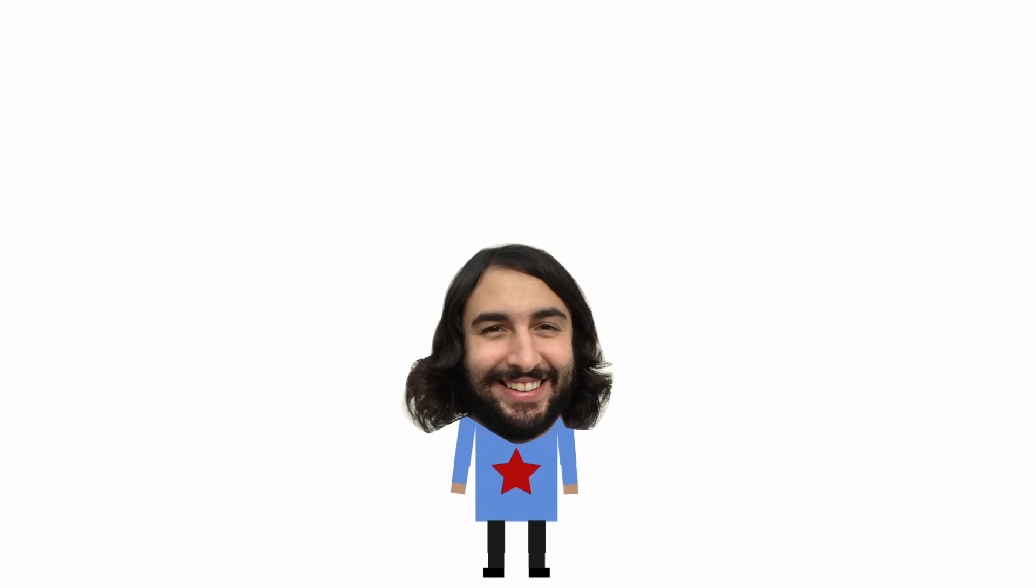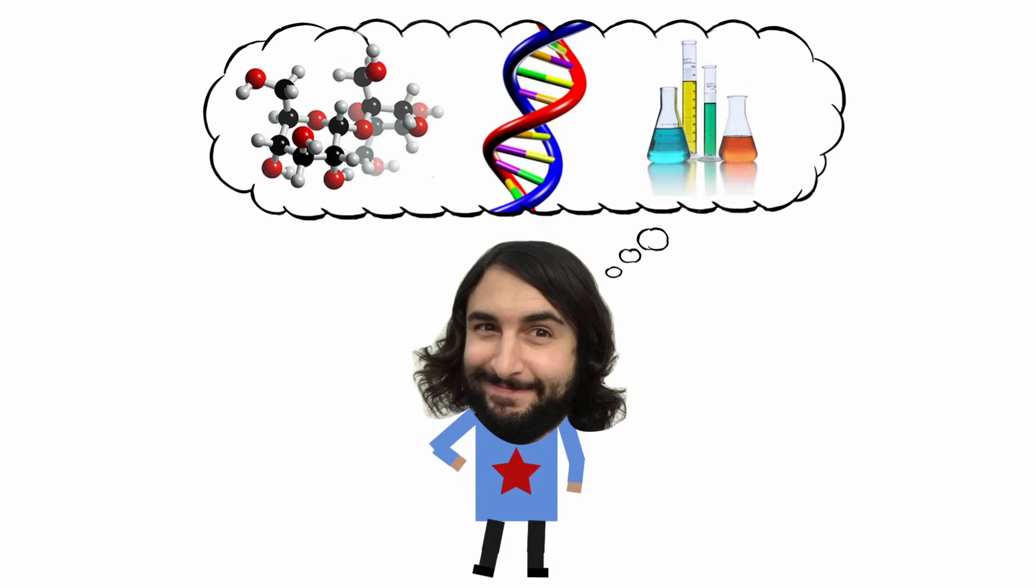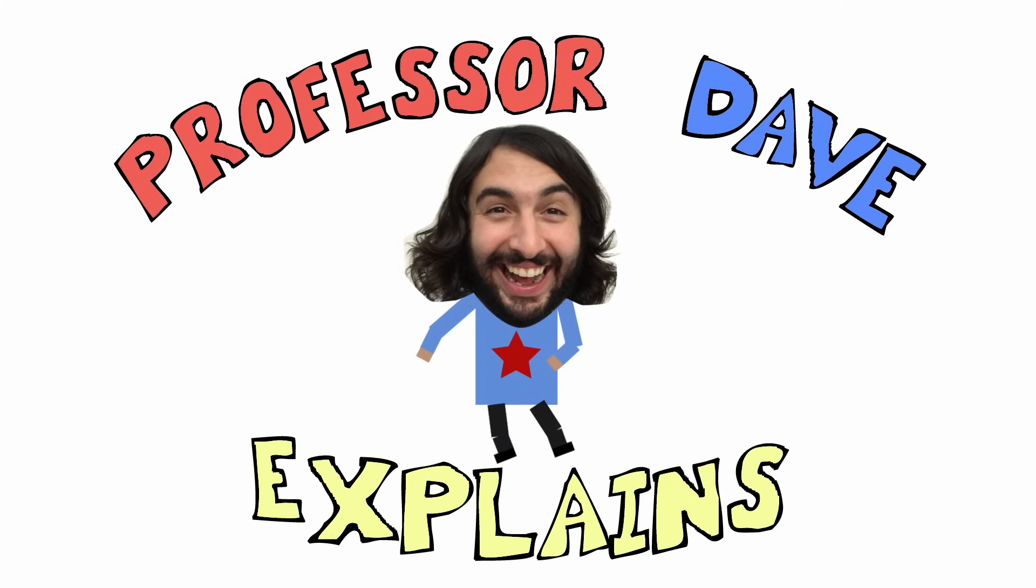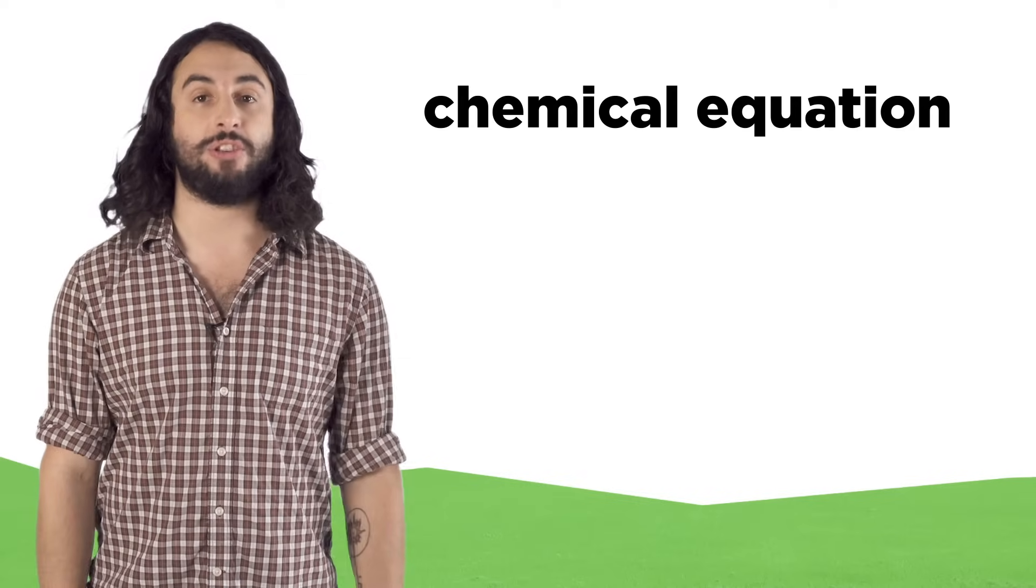Hey, it's Professor Dave. Let's learn how to balance equations. When substances interact and chemistry occurs, we can describe the process using something called a chemical equation.